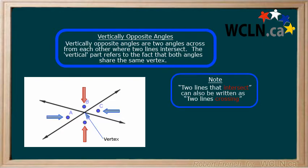Both angles share a vertex, as seen here, which is where the vertical part of vertically opposite comes from.